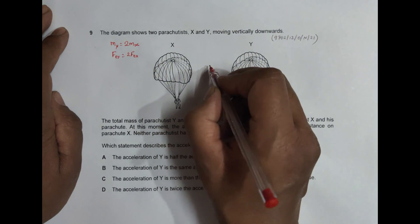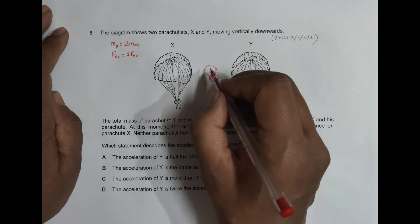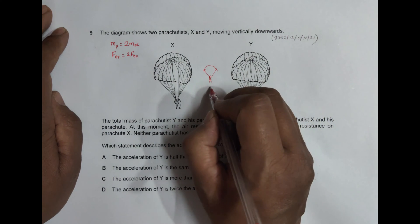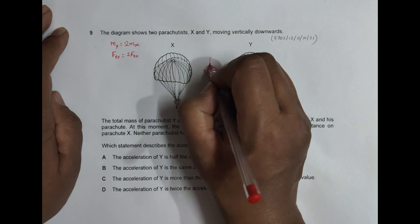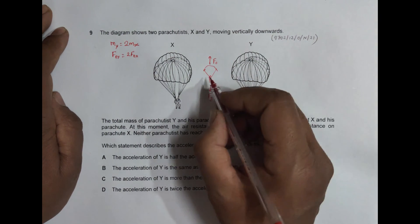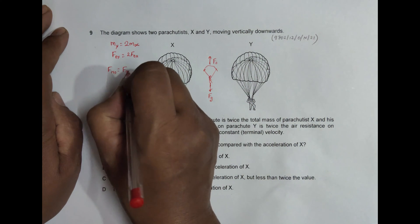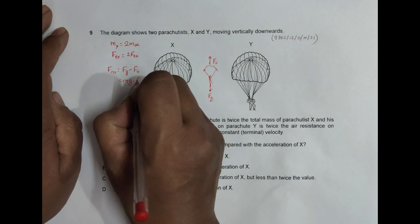One thing to remember is that there are two forces acting here. For a parachutist, we have the force of gravity acting downward and the opposing force F opposing due to air resistance — which with a parachutist is very high. So the resultant force F resultant equals F gravity minus F opposing, which equals mg minus F opposing.